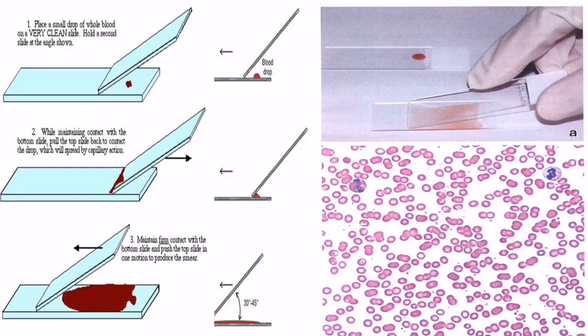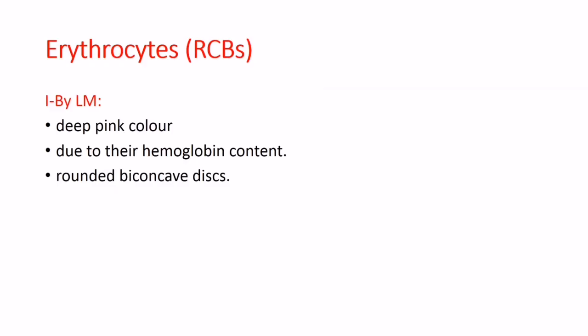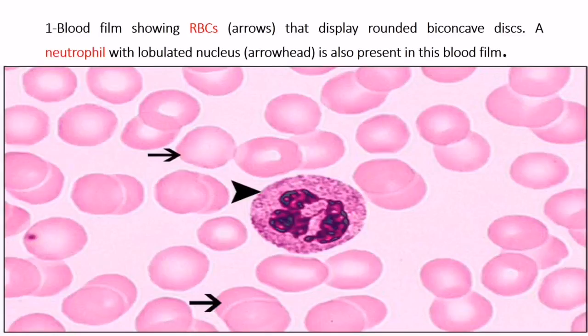Here is a diagram showing the method of preparation of a blood film. Erythrocytes (RBCs) by light microscope appear as deep pink in color due to their hemoglobin content, showing a rounded biconcave disc shape. A blood film shows RBCs pointed by arrow displaying the rounded biconcave disc, and a neutrophil with a lobulated nucleus marked by arrowhead is also present.